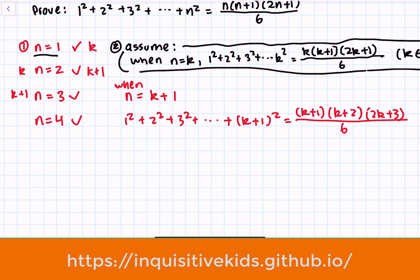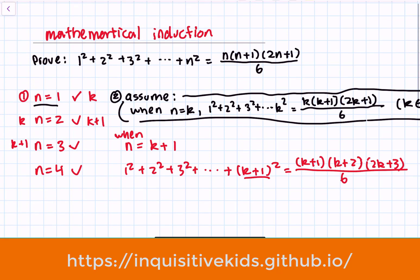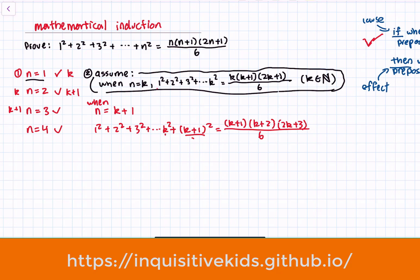So is this true? Well, on the left side, the term before (k+1) squared must be k squared — because it's k squared and then (k+1) squared. Earlier we already said that 1 squared added up to k squared equals k(k+1)(2k+1)/6. So this highlighted portion on the left is identical to that expression, which means we can substitute it in.